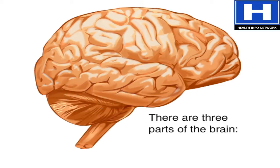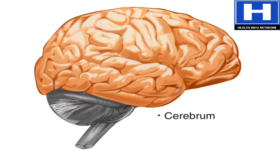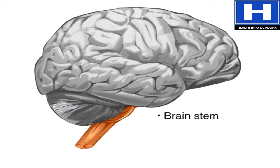There are three major components of the brain. The cerebrum is the largest component, extending across the top of the head down to ear level. The cerebellum is smaller than the cerebrum and located underneath it, behind the ears toward the back of the head. The brain stem is the smallest and is located under the cerebellum, extending downward and back toward the neck.